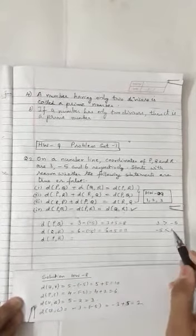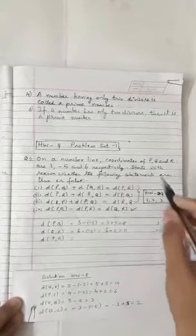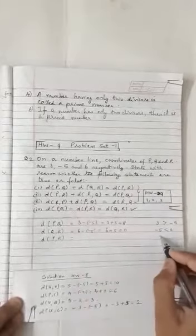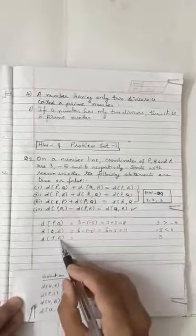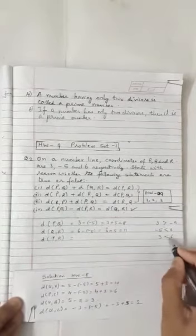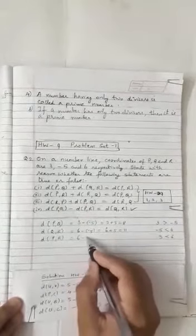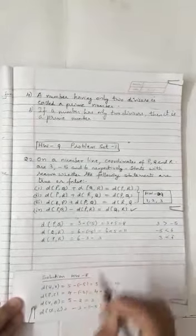And now let us find distance PR. Coordinate of point P is 3 and coordinate of point R is 6. So 6 is greater than 3. So 6 minus 3 is equal to 3.